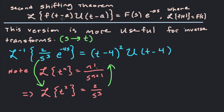This form is more useful when you're taking inverse Laplace transforms — going from s back to t. For example, if you want to take the inverse Laplace transform of (2/s³)·e^(-4s), we identify the pieces: 2/s³ is F(s), and e^(-4s) tells us a equals 4.